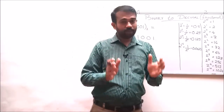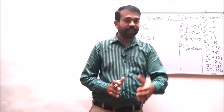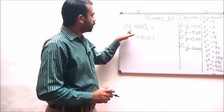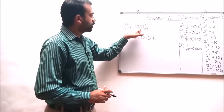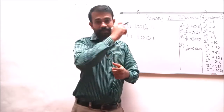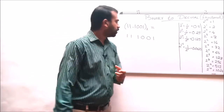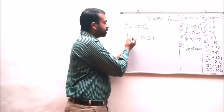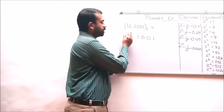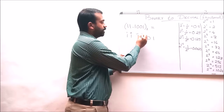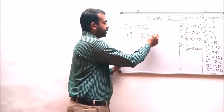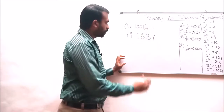So the decimal equivalent of the binary number 110.101 is equal to 6.625 to the base 10. Let us consider one more example. Convert the binary number 11.1001 (base 2) into its decimal equivalent. The digit positions here are 1, 0, minus 1, minus 2, minus 3, and minus 4.